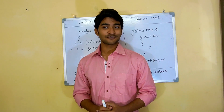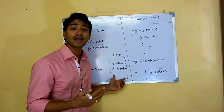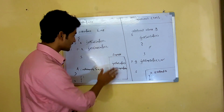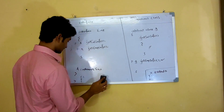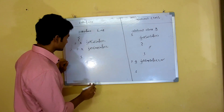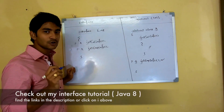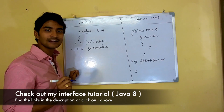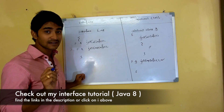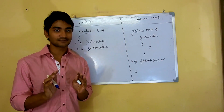Now let's talk about another really important difference that your interviewer may use to confuse you. From Java 1.8 version we can actually write a functional interface, which means we can put functions inside our interface with a body using the 'default' keyword. So from Java 1.8 you can have both concrete methods and abstract methods inside your interface.